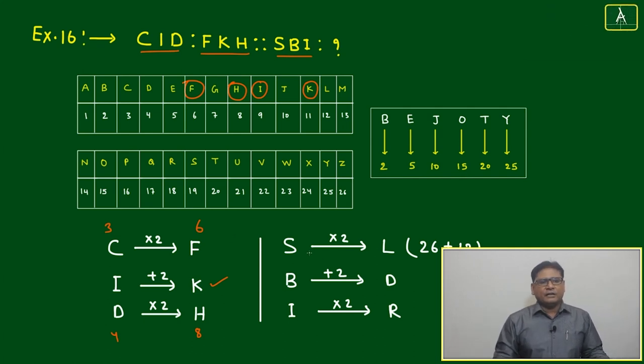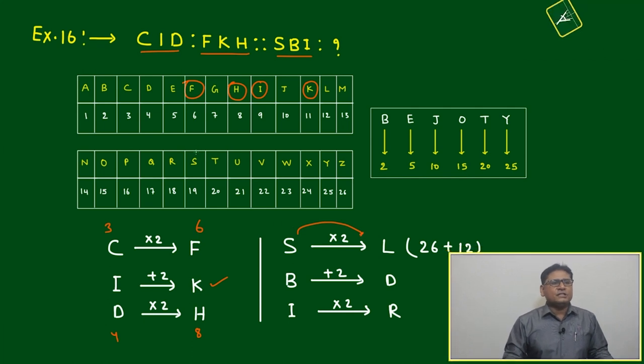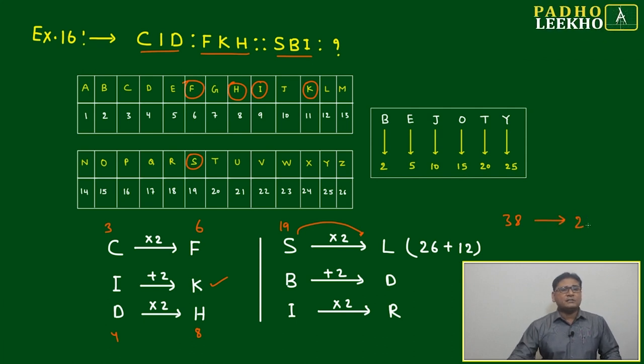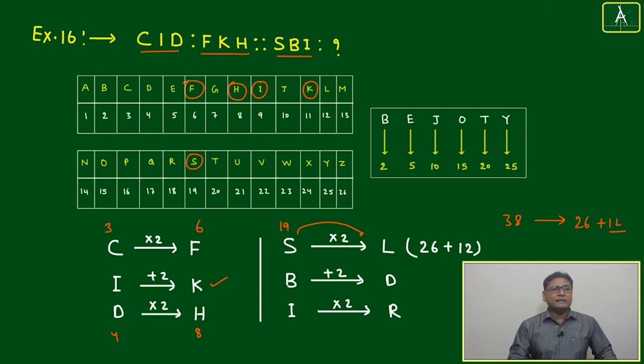Similarly, for SBI, we'll multiply by 2. S's numerical position is 19. Now here you have to use a bit of common sense. 19 multiplied by 2 becomes 38. If it is exceeding 26, no need to worry. Just write 26 plus how much? 12. 12th letter is L.